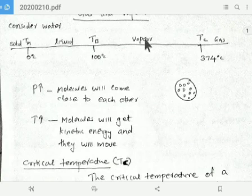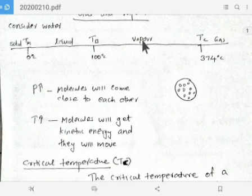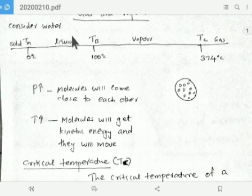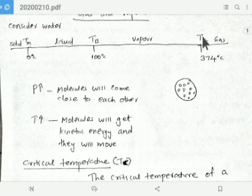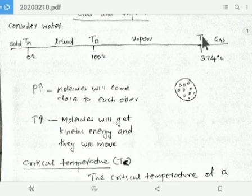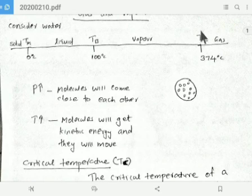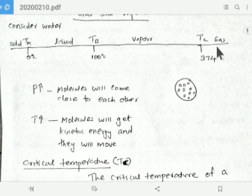For a vapor, if you increase the pressure, the particles come closer to each other and they liquefy — they condense into a liquid. But at the critical temperature, you cannot liquefy the substance no matter how much pressure you apply.